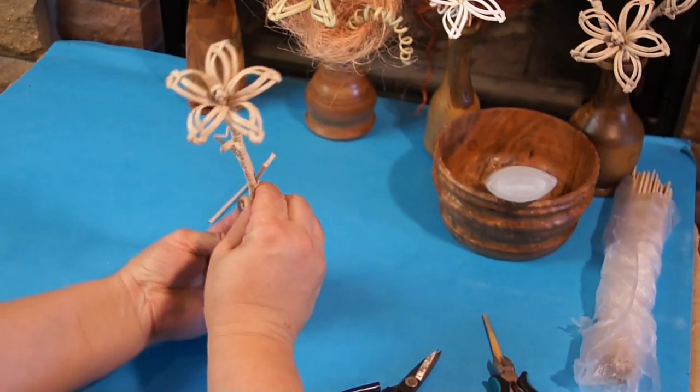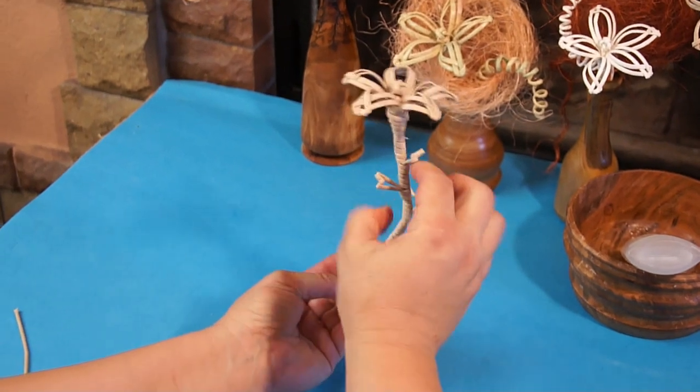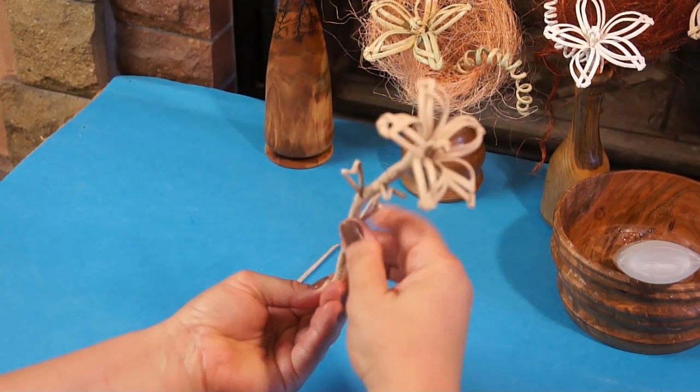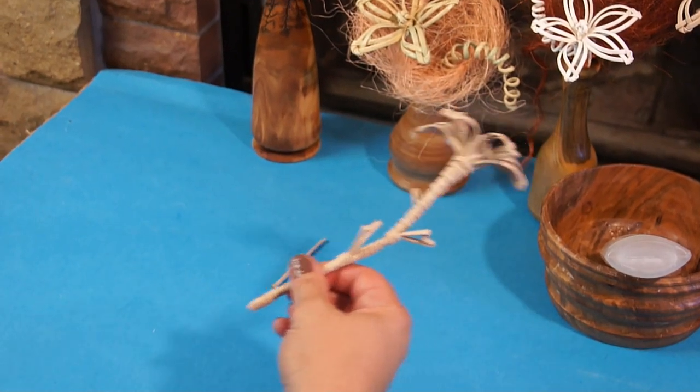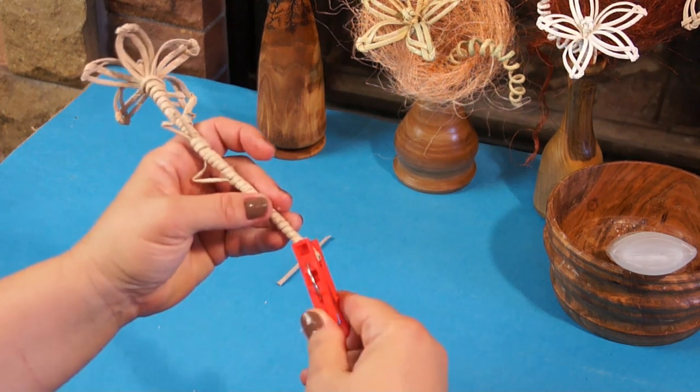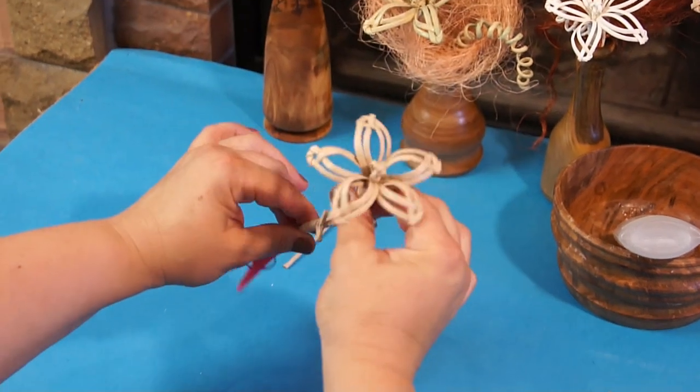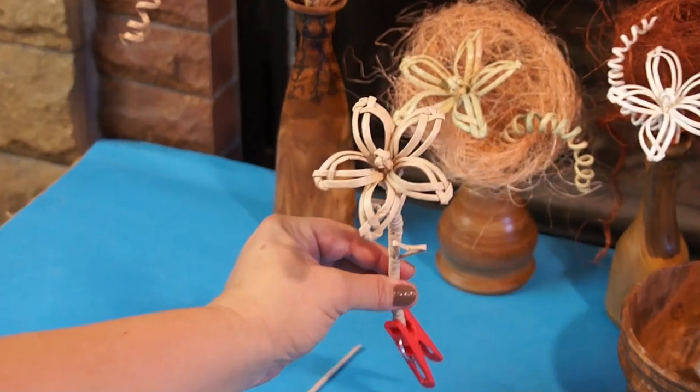As a result, I've got such a flower. Due to a piece of wire inside, the stem can be bent in any direction to form a bouquet. Let's fasten it with a closing clip for a while so far. Let it dry. So we've got such a tender, airy flower.